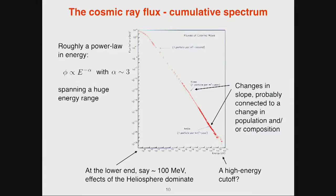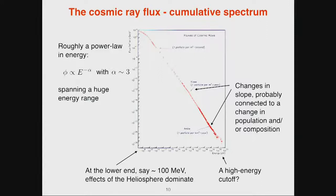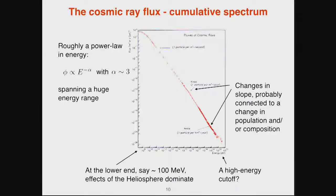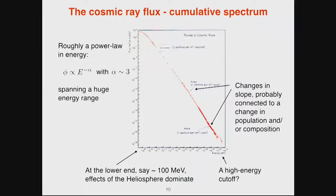It is a power law with two main features. There is a softening of the spectrum around 10^15 eV called the 'knee,' and a hardening around 10^19 eV called the 'ankle.' These are probably imprints of either different cosmic ray species being more efficiently produced at different energies or different cosmic ray populations — and actually it's both.